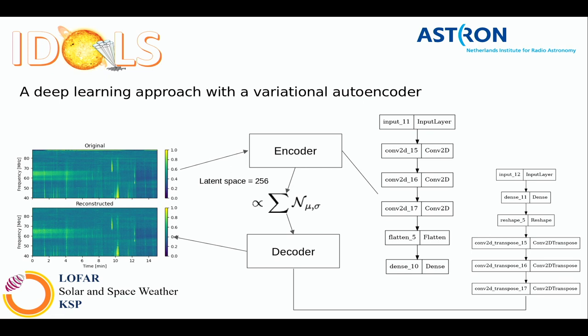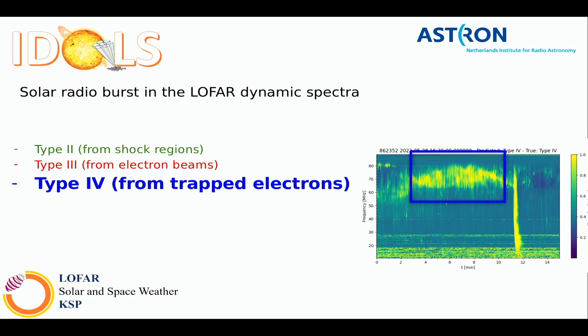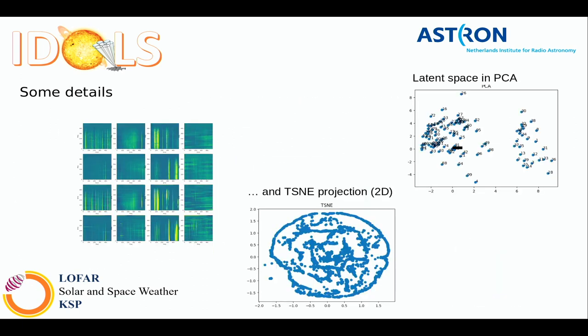Q: Did you try increasing the latent space, say to 500? A: We actually started with 512 and then reduced it to see if we could still reproduce major features. Looking at reconstructed examples, the model focuses on foreground features like Type 3 bursts but doesn't reproduce background features like Type 1 storms. So it prioritizes the major foreground and misses the background — there's definitely room for improvement there.